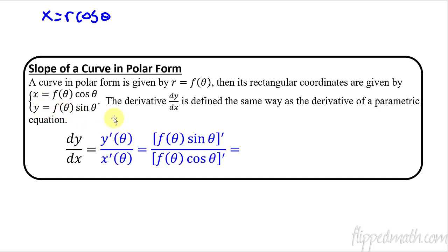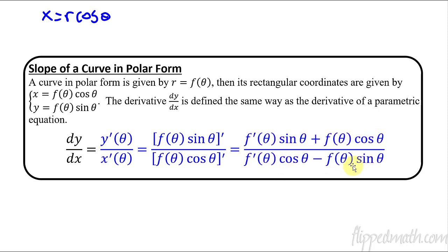y = f(θ)·sin θ goes on top, and x = f(θ)·cos θ goes on the bottom. Since f(θ) is just whatever r equals, this is r·sin θ over r·cos θ. Taking the derivative of both requires the product rule on the top and the product rule on the bottom. In practice, I just take the derivative of the y component using product rule for the numerator, and the derivative of the x component using product rule for the denominator.